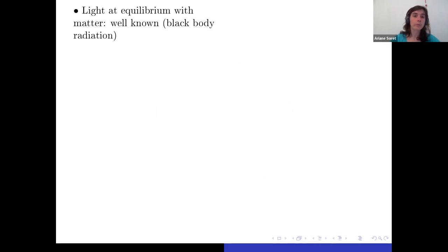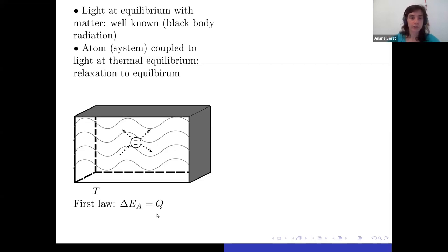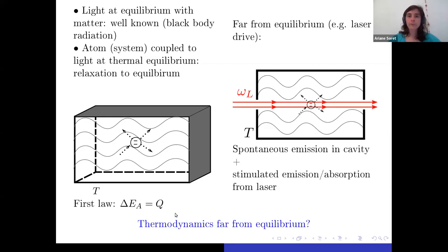The thermodynamics of these processes are well known at equilibrium. Light at equilibrium with matter is described by blackbody radiation. In this setup, you have some matter — an atom inside a cavity with radiation at equilibrium — and the energy exchanges between the atom and the radiation satisfy the first law, where the type of energy exchange is just heat.